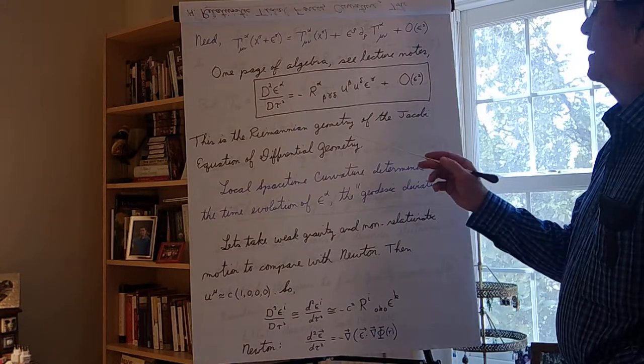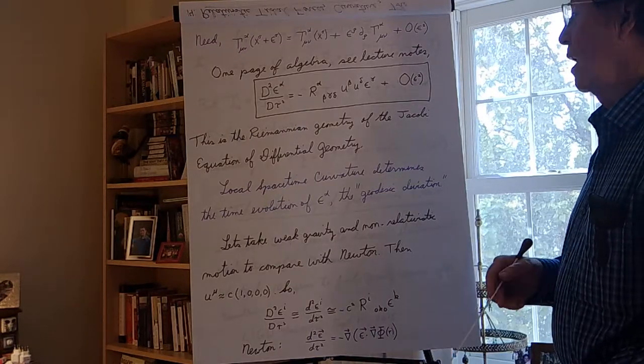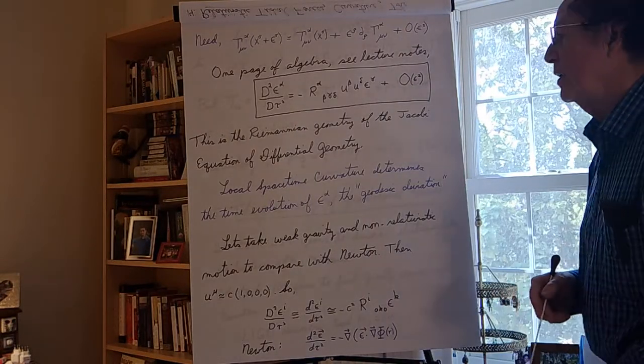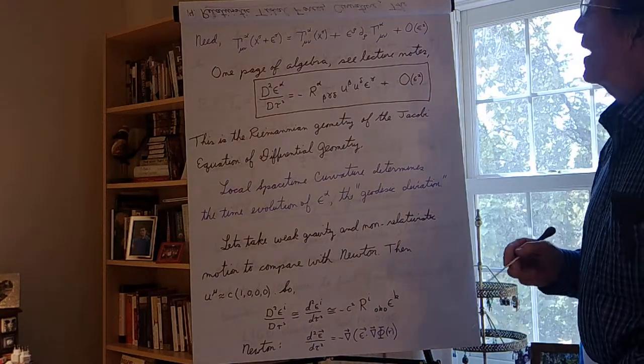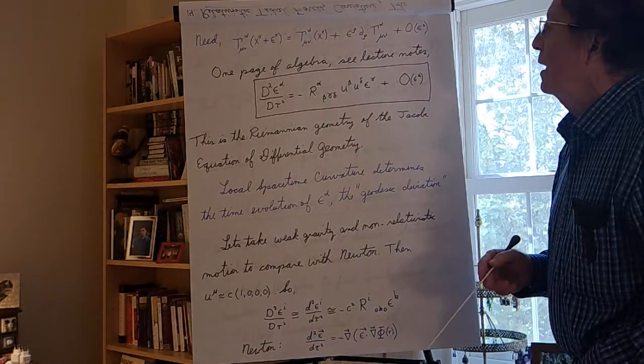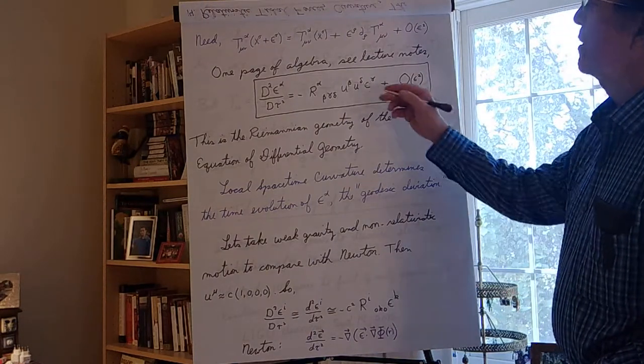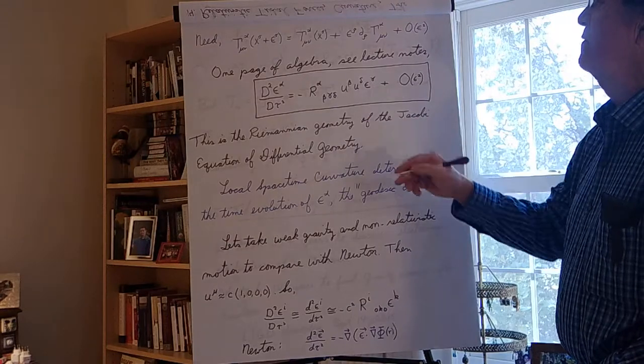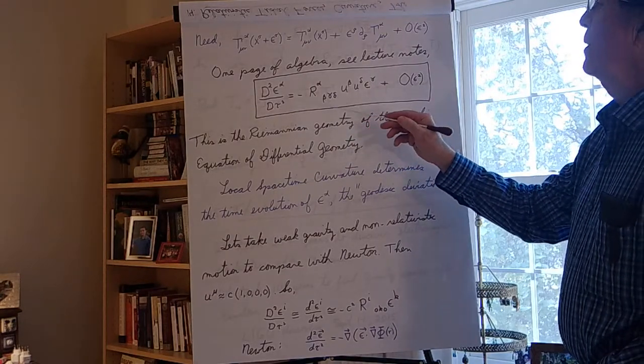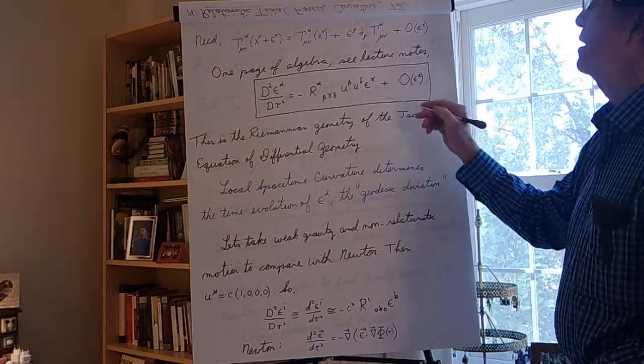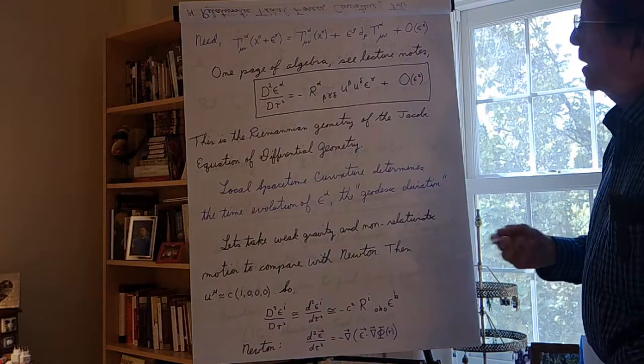In the differential geometry course we do it in a more geometric way and maybe that one is more instructive to show the geometry behind it. But either way, there you go. Riemann geometry in the Jacobi equation. And we see our local space-time curvature determining the time evolution of epsilon, the geodesic deviation, just like we found it in our models in classical differential geometry where we were in fewer dimensions but we had the second derivative with respect to a parameter along a curve being proportional to the Gaussian curvature, some kinematics, and then the deviation itself.